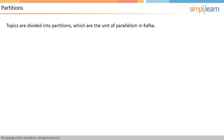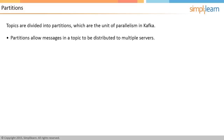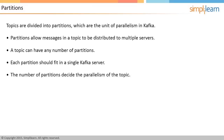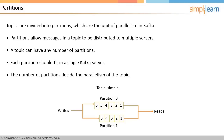Topics are divided into partitions, which are the unit of parallelism in Kafka. Partitions allow messages in a topic to be distributed to multiple servers or brokers so that messages can be processed in parallel. A topic can have any number of partitions, and each partition should fit in a single Kafka server. The number of partitions in a topic decides the parallelism of the topic. The image illustrates two partitions of topic simple: partition zero with six messages and partition one with five messages.